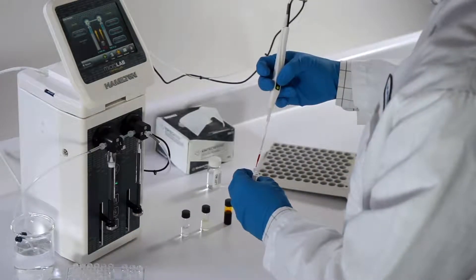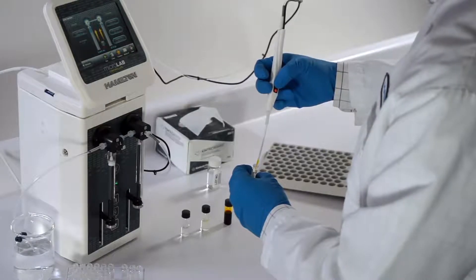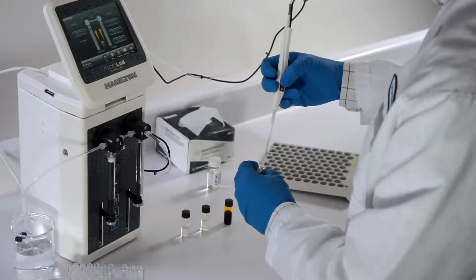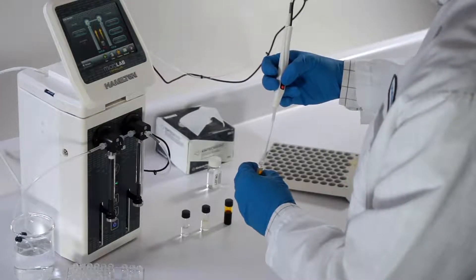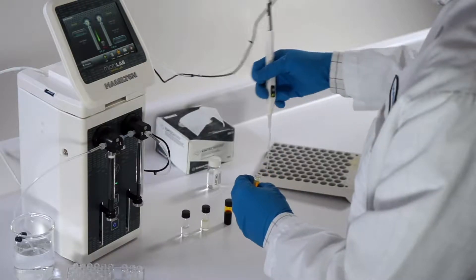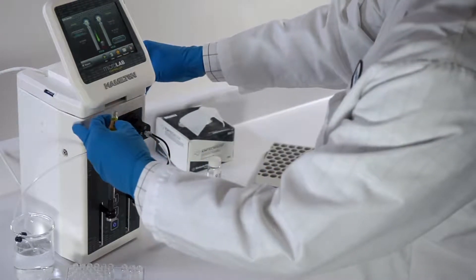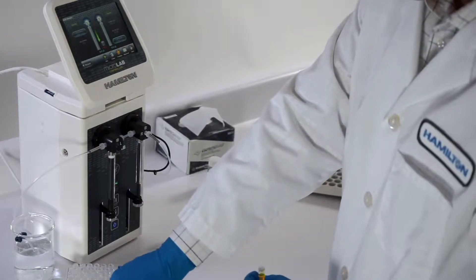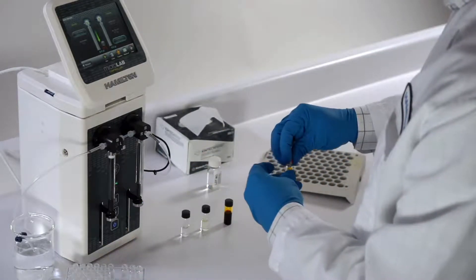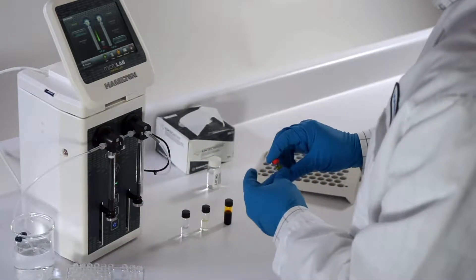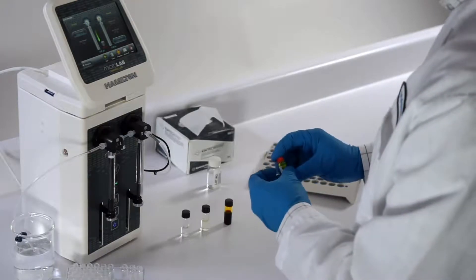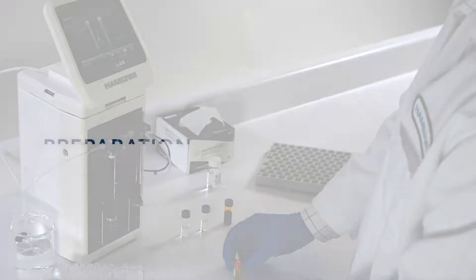The standards exit the tubing first and are followed by diluent to flush through the tubing and ensure that all the standards are quantitatively transferred to the stock solution vial. The technician then caps the vials and shakes them for additional mixing. Now the user is ready to move on to preparation of the standard curve.